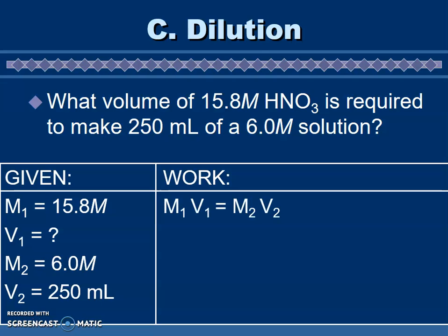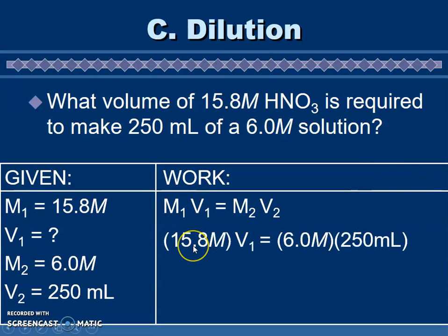Here's our equation and now we can plug some numbers in. M1, plug that right in: 15.8. V1, that's our unknown, so we can leave it there or we can put an X or question mark, whatever makes you happy. We have our second concentration, 6.0, and we have our final volume is 250 milliliters. Make sure that we are keeping up with our units here so that we end with what we should end with. Now we just do our math, so use our algebra skills. Start by multiplying these two numbers together.